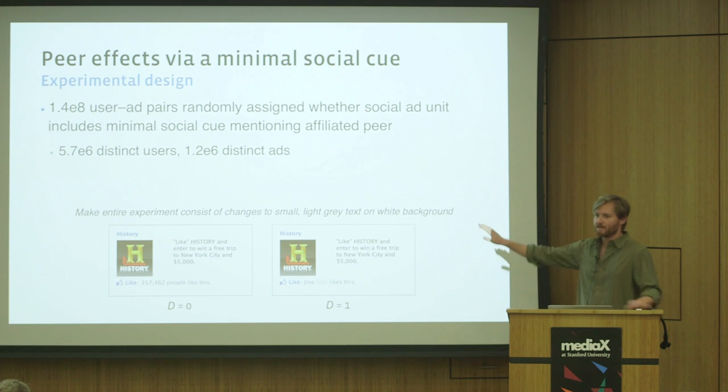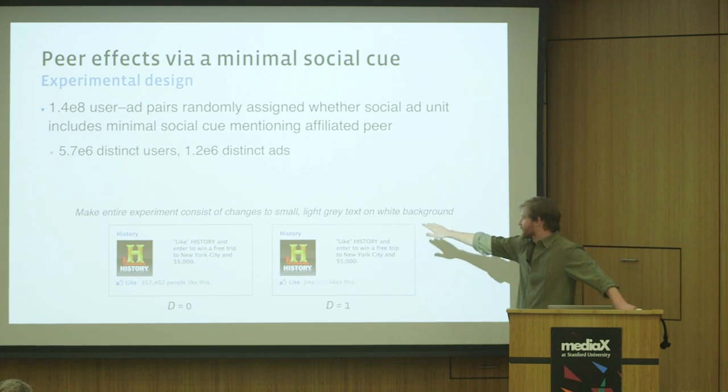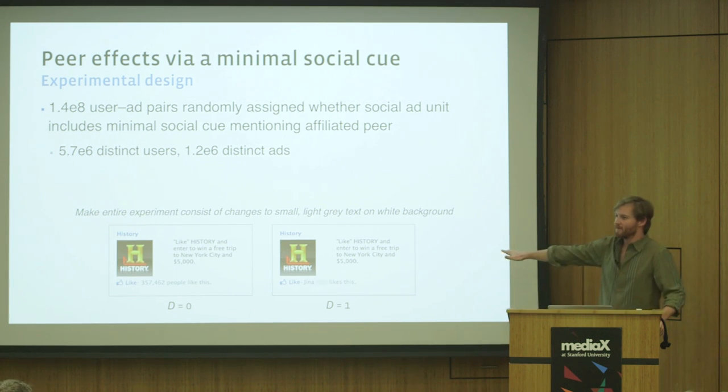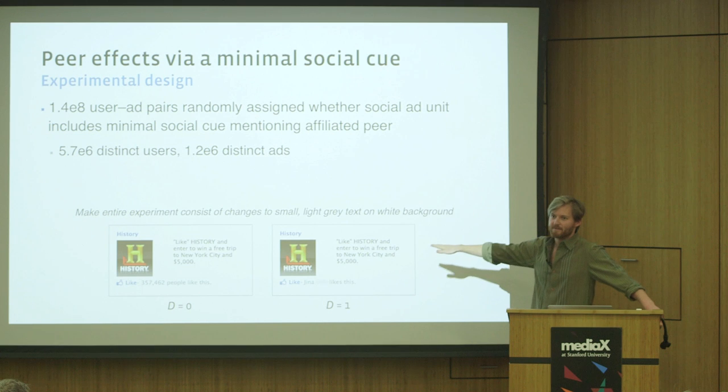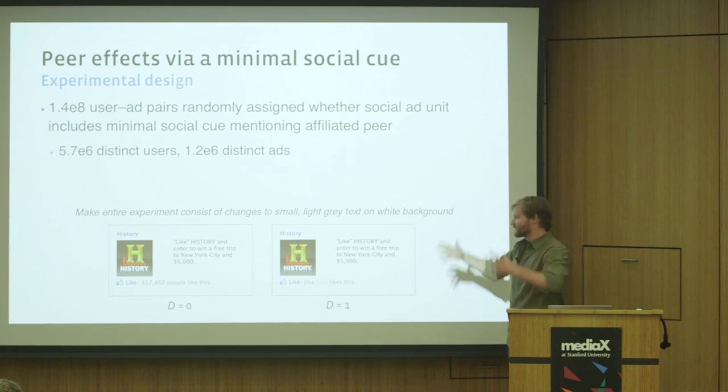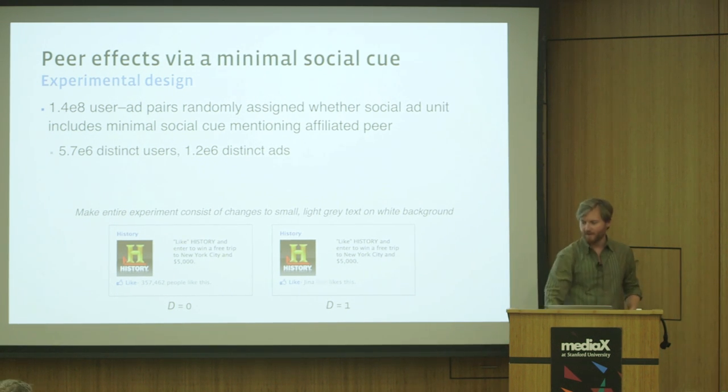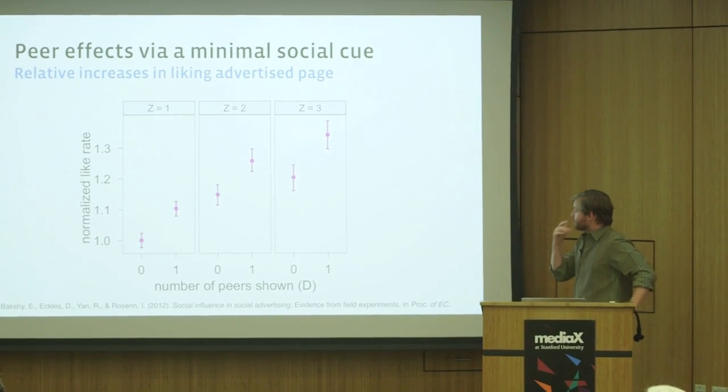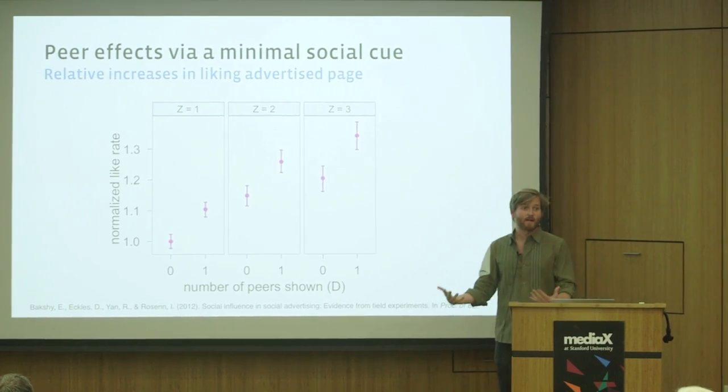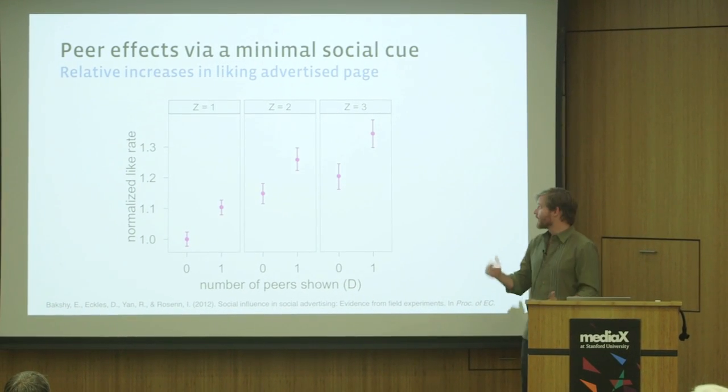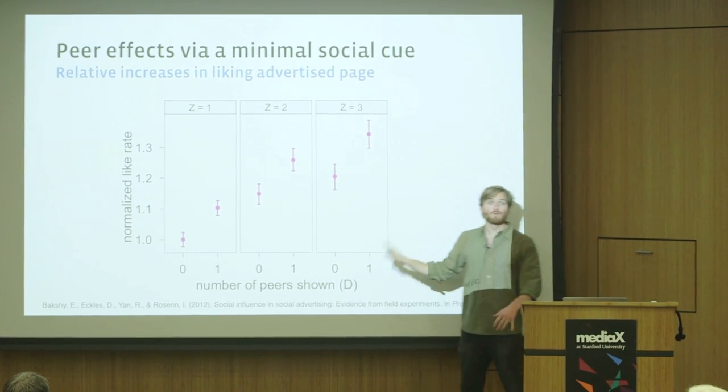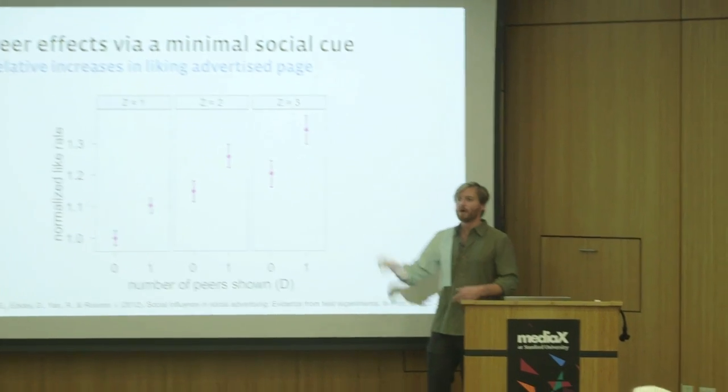This is actually one of my kind of favorite ways to run an experiment, where the entire experiment consists of a change to small light gray text on a white background. Basically, we have the same number of non-white pixels here. Nowadays the social ads on Facebook have a lot more social to them. This is a very, very minimal indicator that your friend is associated with this brand. Here are the results of this experiment, looking at the normalized like rate—how many of the people who see this ad go on actually to like that page—for people who have one, two, or three friends who actually do like the page, and then we decide to either show one of those friends selected at random or zero of those friends.